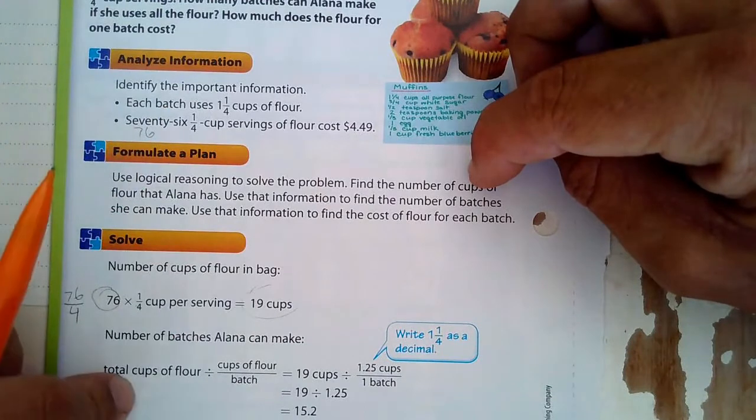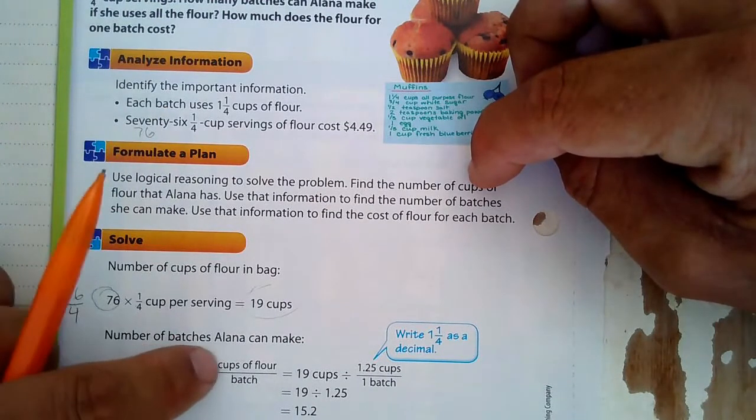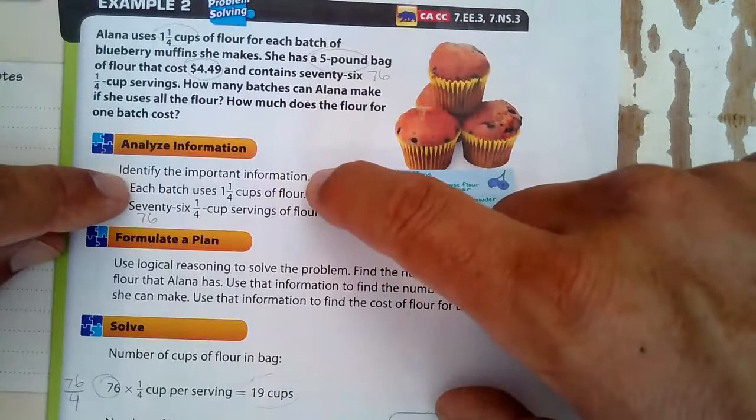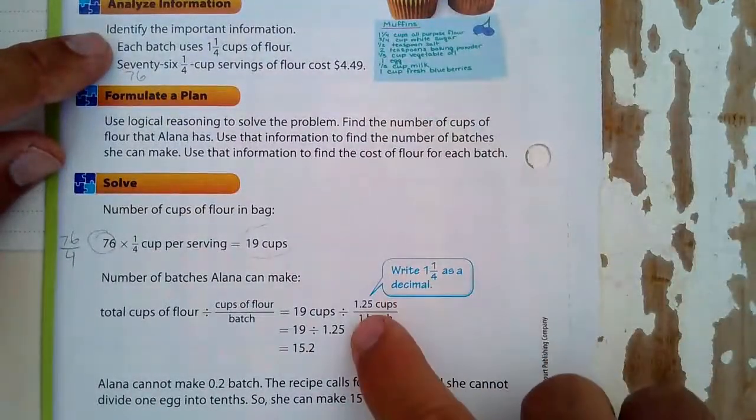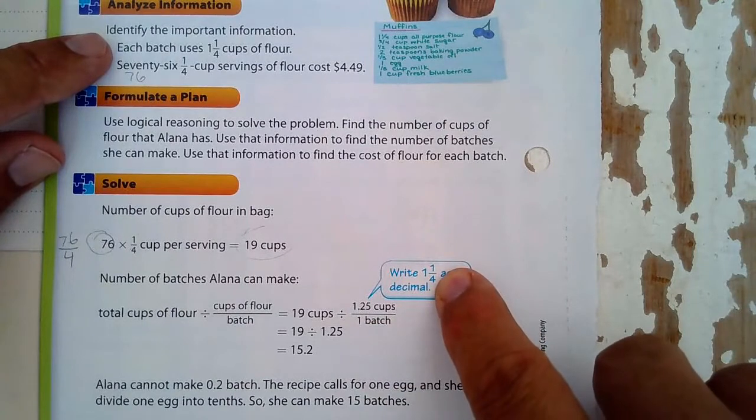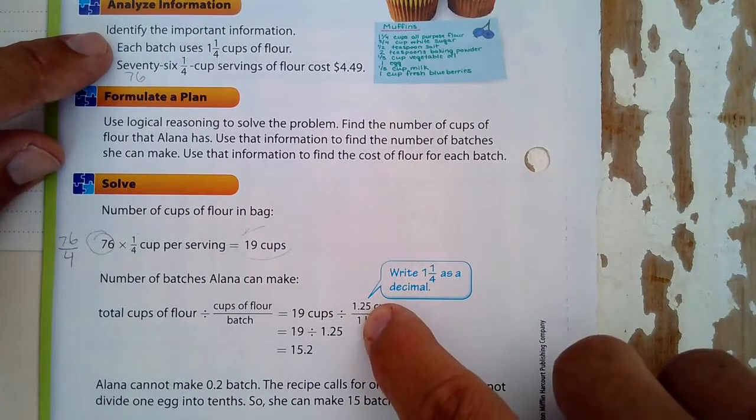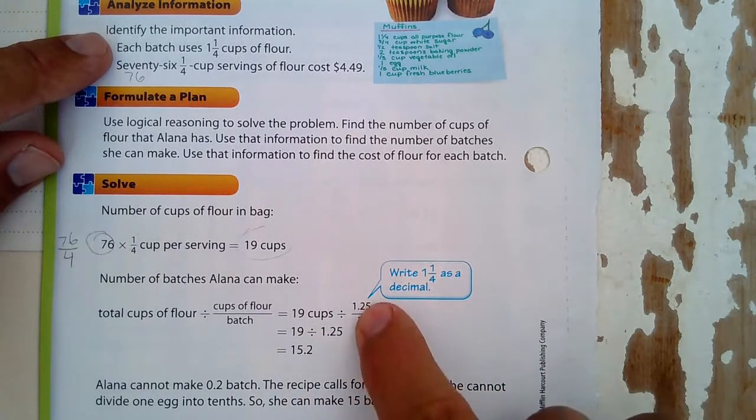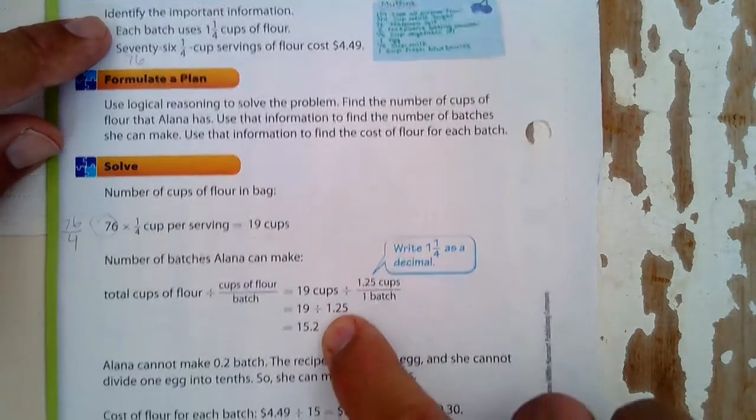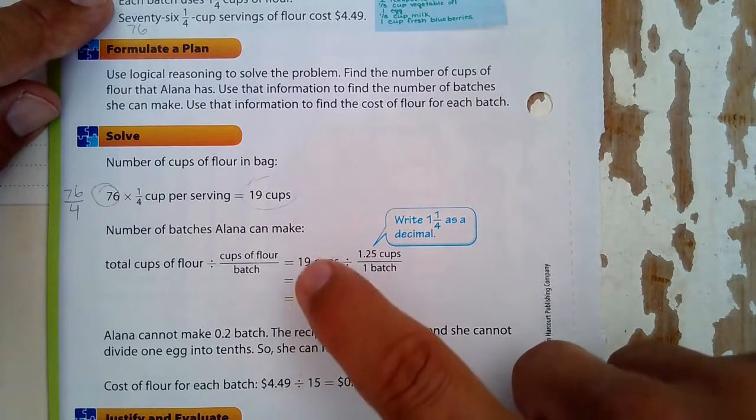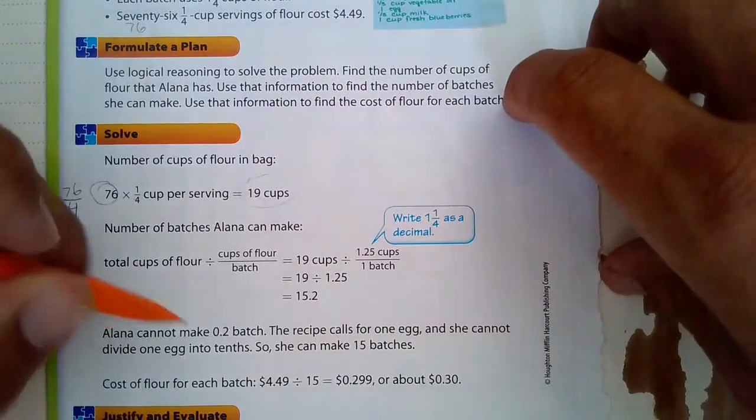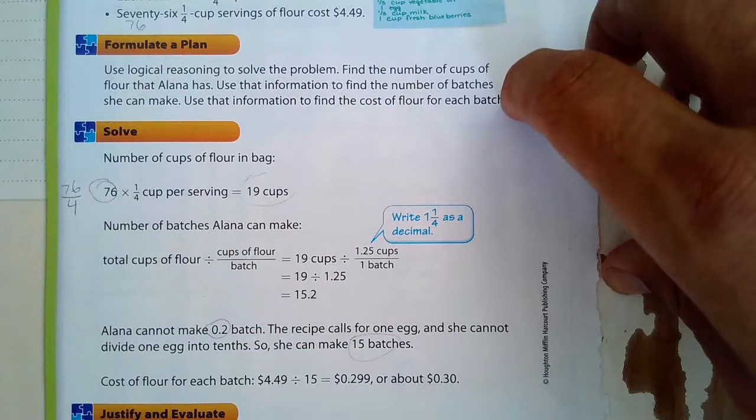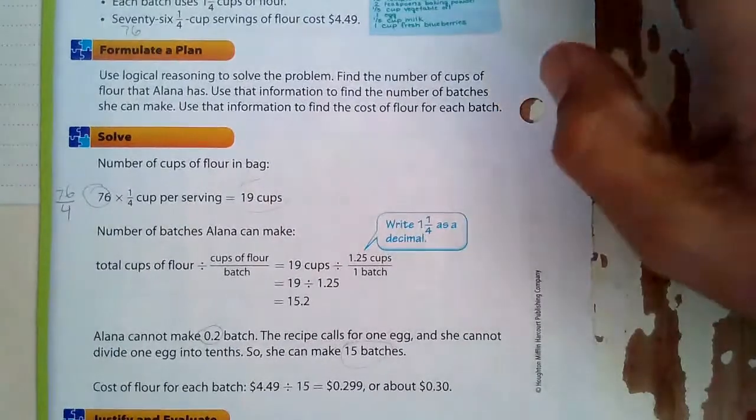Now using that, she uses how much flour per batch? She uses 1 and 1/4 cups per batch. And 1 and 1/4 is 1.25 because one fourth, we call it a quarter, and a quarter is 25 cents. So 19 cups divided by 1.25, you can just do 19 divided by 1.25. When you do it in the calculator, you have 15.2. Alana can't make 0.2 batches, so we're just going to say that she can make 15 batches with that five pound bag.